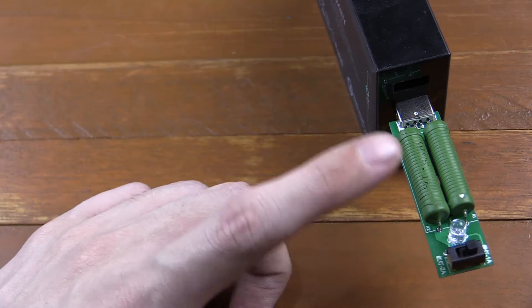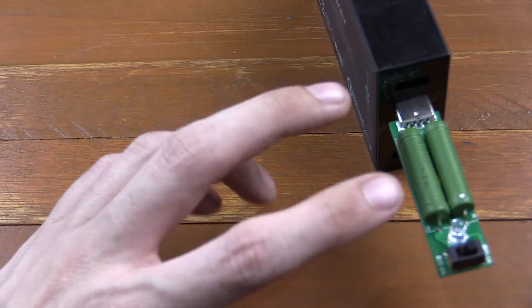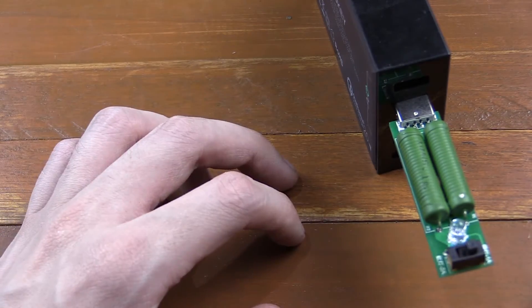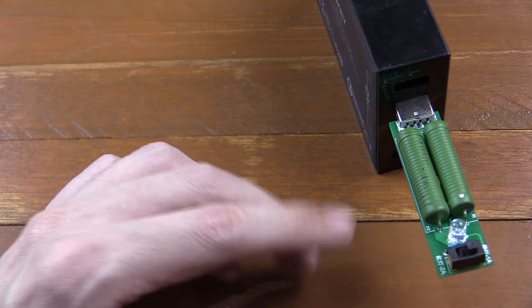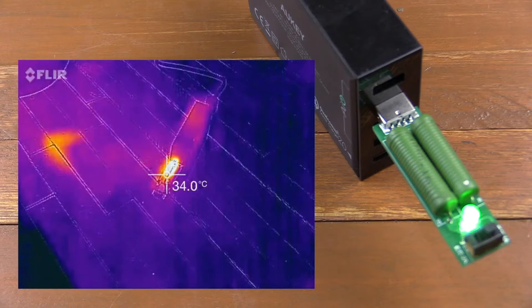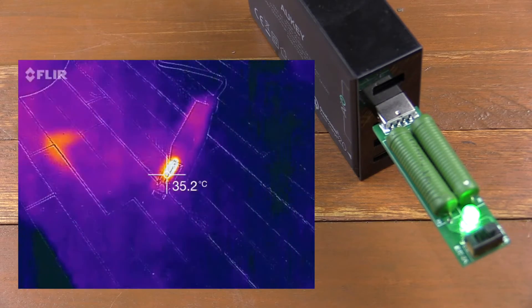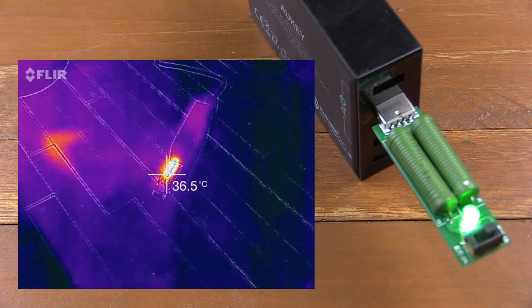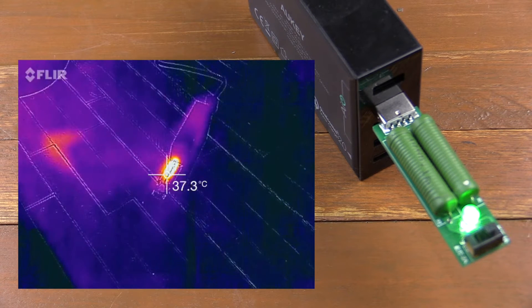So we're going to start with it just plugged in as it comes from the factory. No heat sink, no cooling, anything like that and we'll just see how fast it gets up to temperature and what kind of temperatures it hits. So you should be able to see from my FLIR 1 that the temperature is rising. We're currently around 36 degrees Celsius.